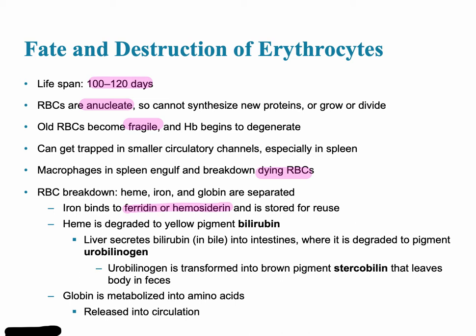The heme is broken down into bilirubin, a pigment that is degraded by the liver. The liver secretes the bilirubin in the bile, and it is secreted as the pigment urobilinogen, which is then transformed into a brown pigment found in the feces.